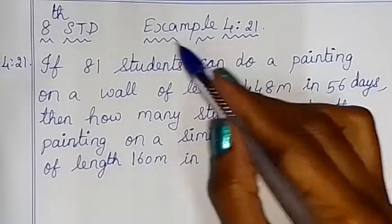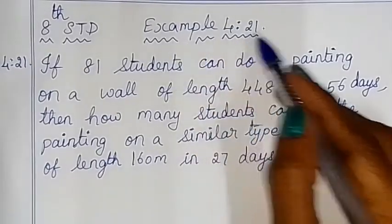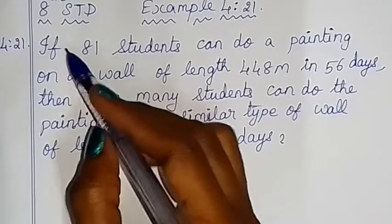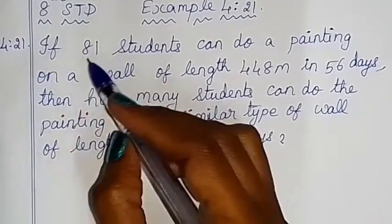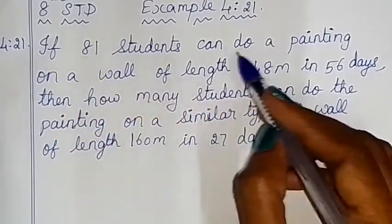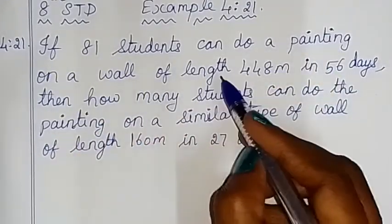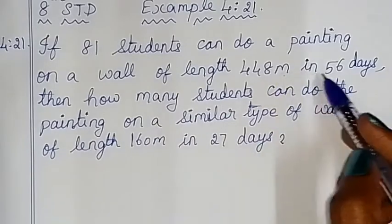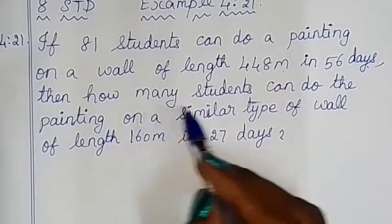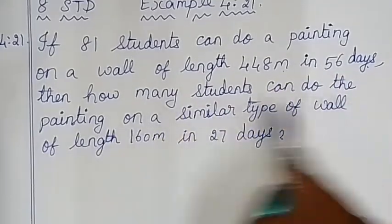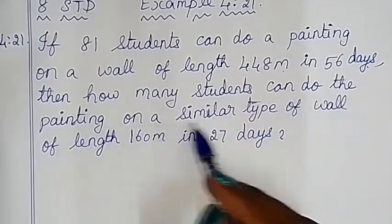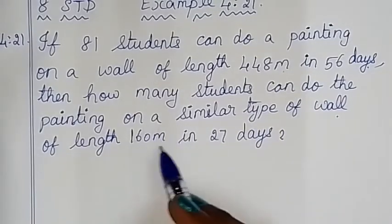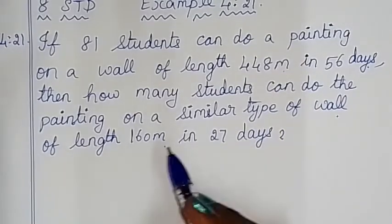Hello children. I will show you example 4.21. If 81 students can do a painting on a wall of length 448 meters in 56 days, then how many students can do the painting on a similar type of wall of length 160 meters in 27 days?